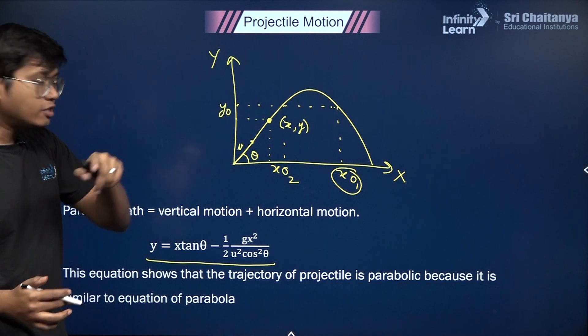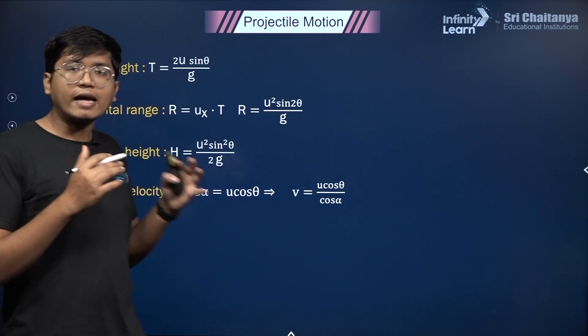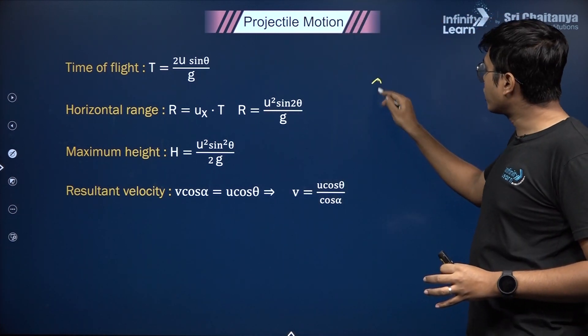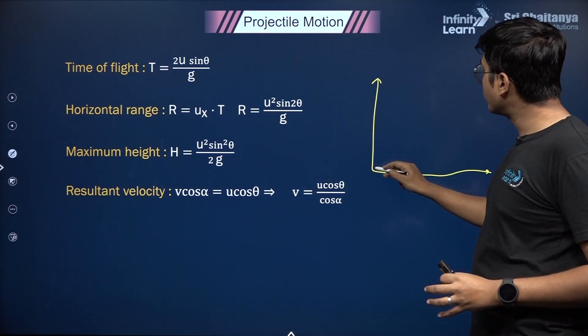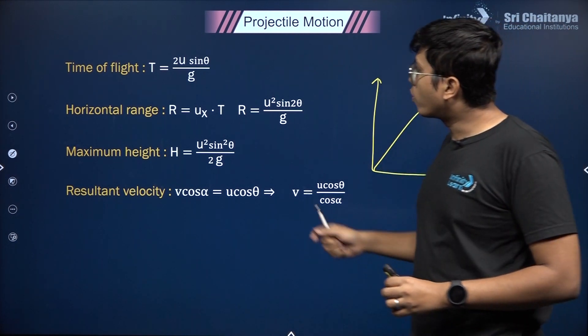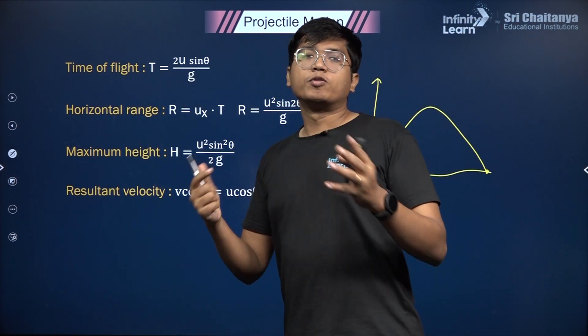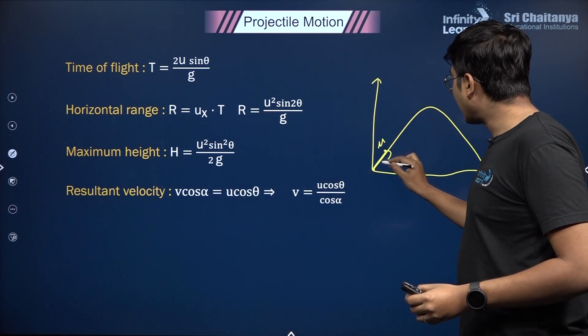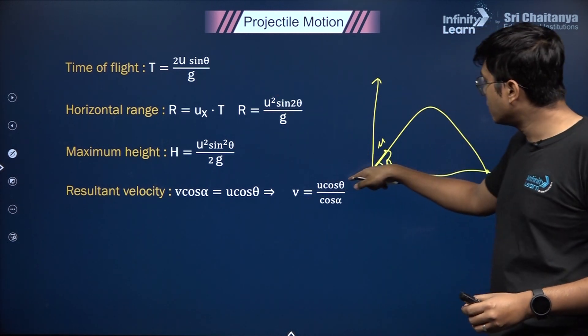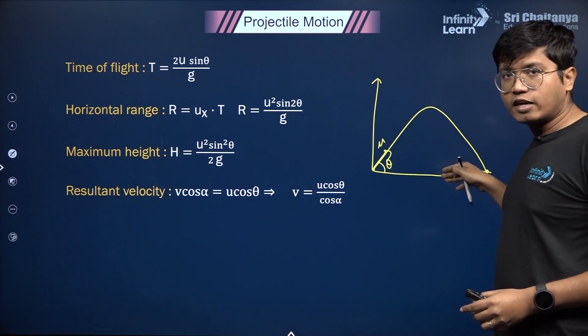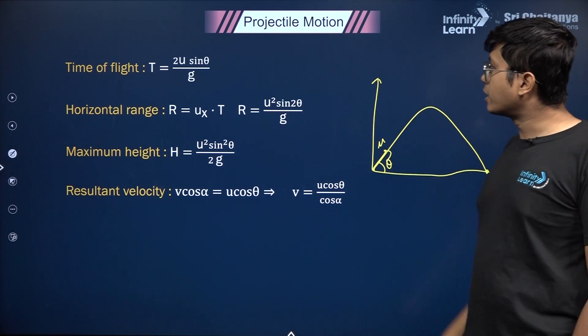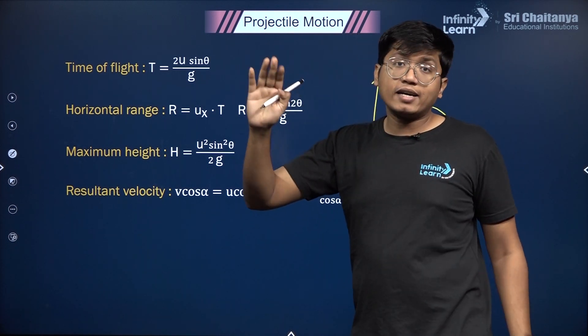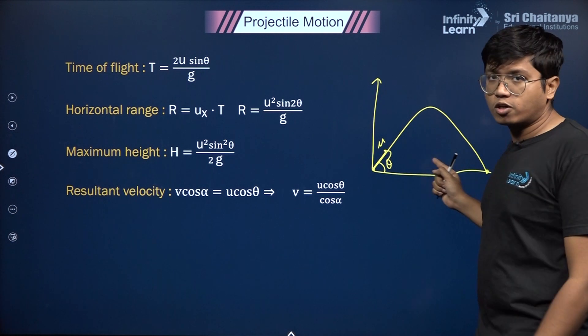Let's look at the next thing you need to know, which are the standard relations. For the regular projectile where you start from ground level and it lands at ground level, you have the time of flight which is given by T = 2u sin θ / g. Important point to note: only depends on the vertical component u sin θ, does not depend at all on the horizontal component.